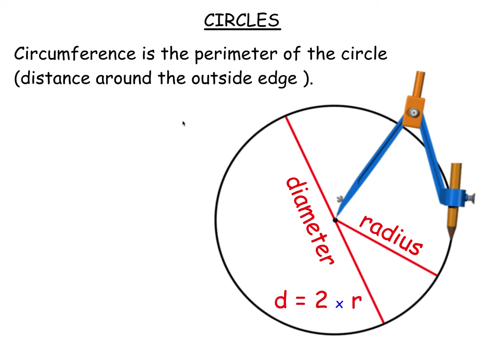This is the third video in the area series. We are looking at circles. If you use a set of compasses to draw a circle, you would place the point of the compass at your centre, and the pencil would mark out the circumference of the circle — the outside edge.